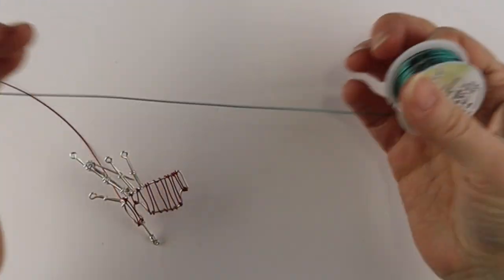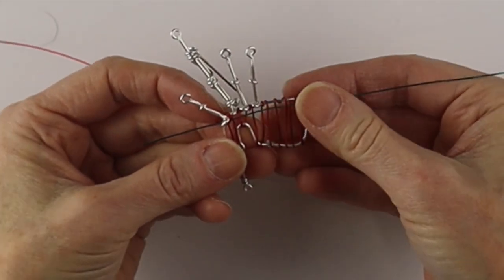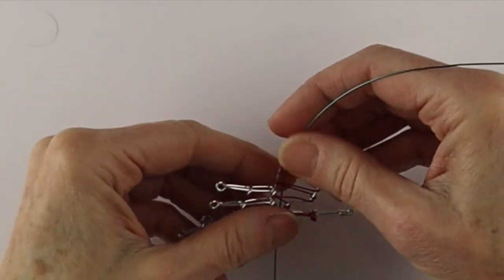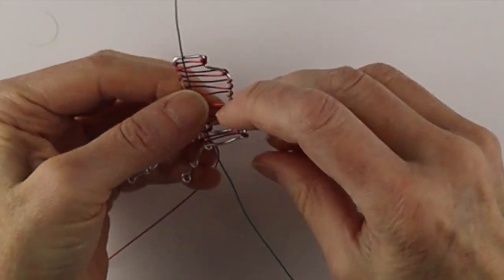Then I'm going to add some green as well and just slide it through the red going the other direction. We will just wind it back and forth.